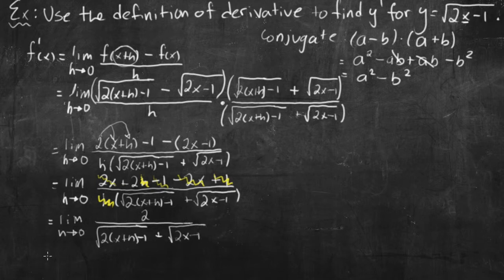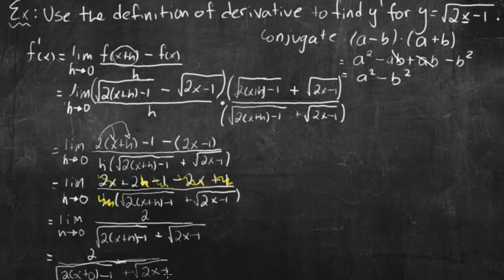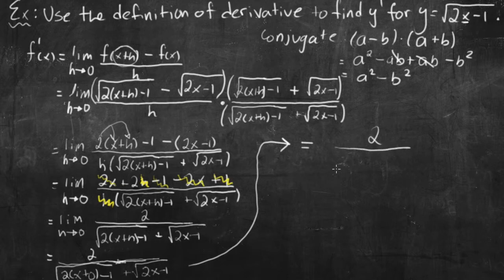What I mean by that is I don't need to write it anymore. Basically, where I see an h, I'm putting 0. So I have 2, and I'm running out of space here, 2 over square root of 2x plus 0 minus 1, so that's all underneath 1 square root, and then plus square root of 2x minus 1, just like that. That leaves me with 2 on the top all over, and if you look at this bottom, that's just going to be square root of 2x minus 1 plus square root of 2x minus 1.